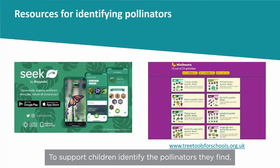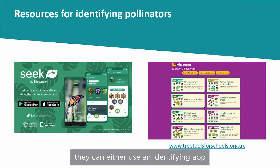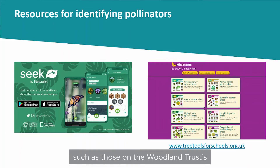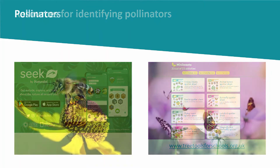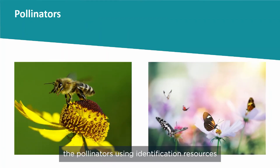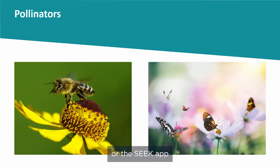To support children in identifying the pollinators they find, they can either use an identifying app such as Seek from iNaturalist, or use identification resources such as those on the Woodland Trust's Tree Tools for Schools website. They should also be asked to identify the flowering plants that are attracting the pollinators, using identification resources or the Seek app.